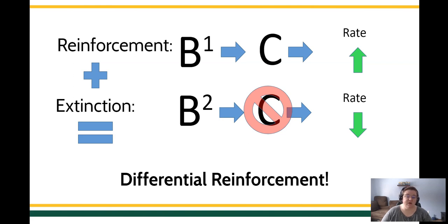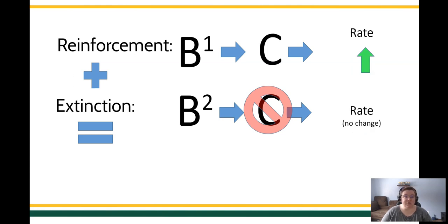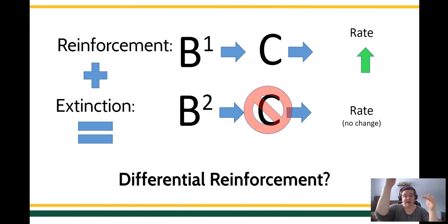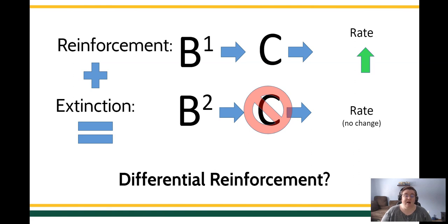Let's do one that's maybe a little harder. If you've got one behavior contacting reinforcement and that behavior increases, but behavior 2 contacts no reinforcement and remains unchanged — is this differential reinforcement? I would actually say yes, because what we're looking for is a relative increase of one behavior compared to another. It can be reinforcing one behavior and seeing it increase while the other remains unchanged, or one behavior continues to be reinforced while the other decreases in rate. Differential reinforcement can look like a lot of different things.